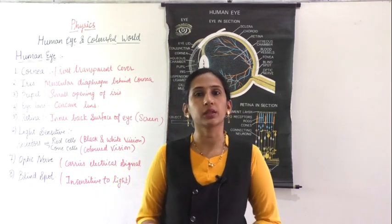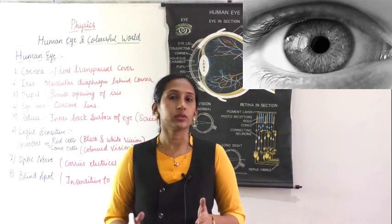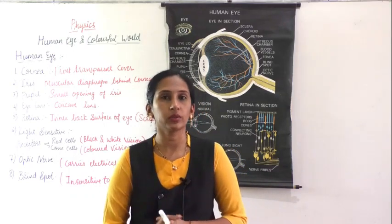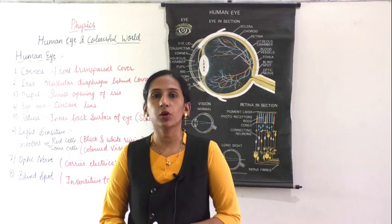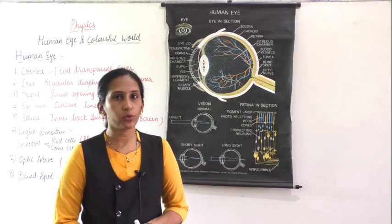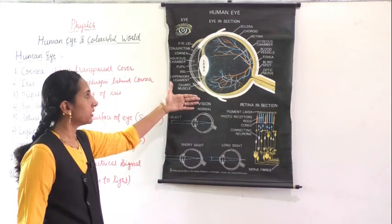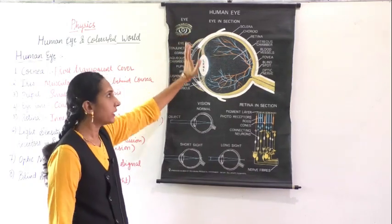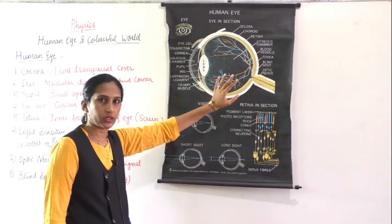In this lesson you are going to study the human eye and many different phenomena related to light. You all use the eye to see the colorful things around us — all the universe, all the nature. So what is the eye and how it works, we will study in today's lecture. Here you can see the diagram of the human eye — the front view and the inner cross-sectional view.